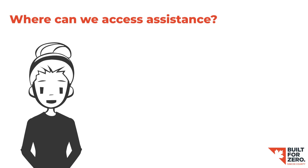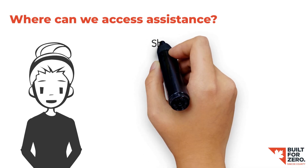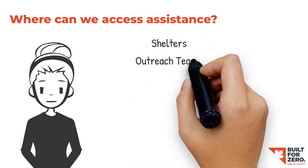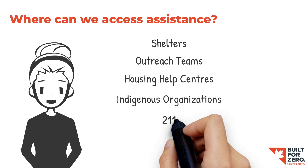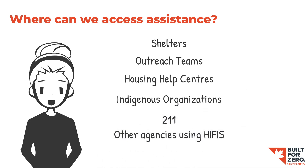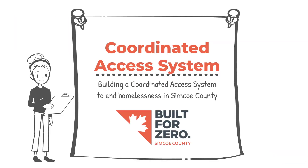Access points to the Coordinated Access System include shelters, outreach teams, housing help centers, Indigenous organizations, and 2-1-1, along with other agencies, which use the Homeless Individuals and Families Information Systems — otherwise known as HIFIS — to track and share client information within our Coordinated Access System. Together, we can and will end chronic homelessness in Simcoe County. A Coordinated Access System will help us get there.